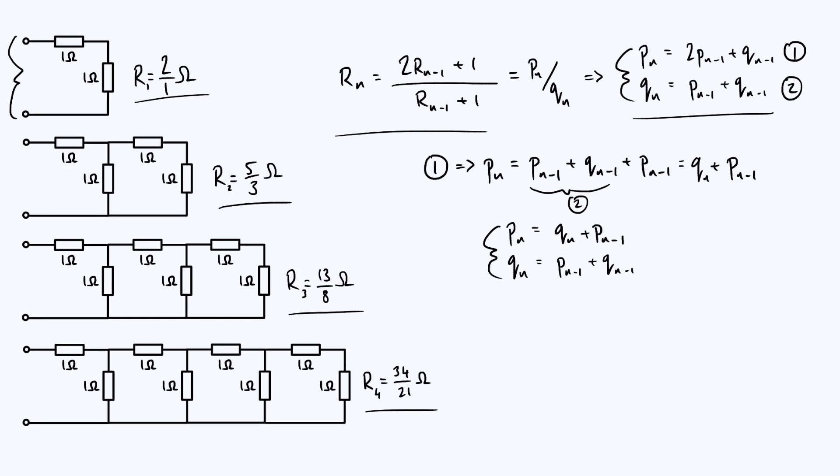Now it still may not be obvious what this has to do with the Fibonacci sequence, so what I'm going to do to make the connection clear is make a new sequence where I have Qs and Ps alternating. So what I mean by that is we create a new sequence, the first term is going to be Q1, the second term is going to be P1, then I go to Q2, P2,